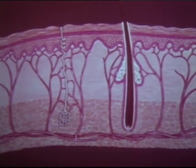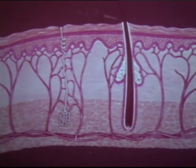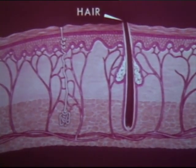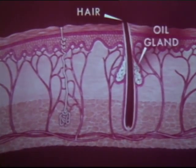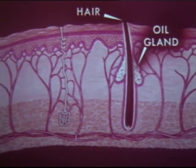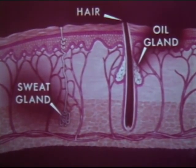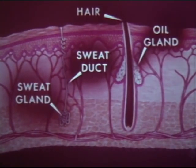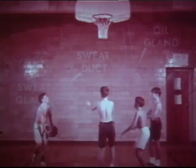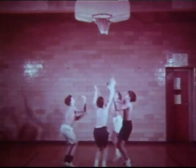This drawing shows us a cross section of the skin. Here is one of the hairs which grow out of the skin. The oil gland produces oil which makes its way along the hair to the surface of the skin. And here's a sweat gland — it produces sweat, or perspiration, which is carried along the sweat duct to the surface of your skin.